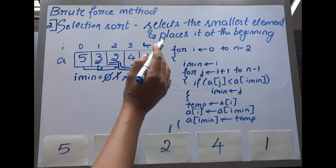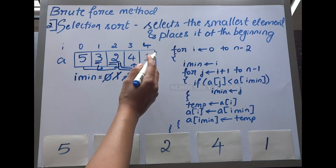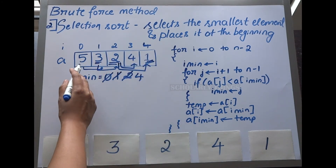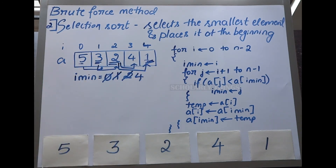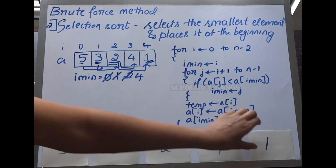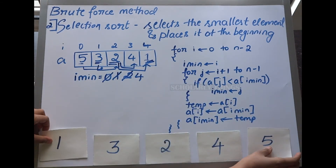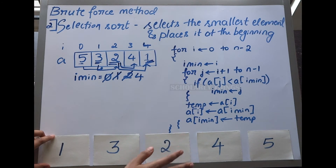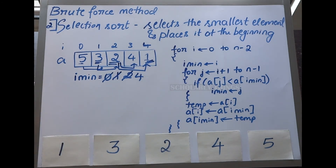At the end of the iteration, the minimum value found — which is 1 — is swapped with the element we started with, which is 5. So 1 and 5 are swapped. At the end of the first iteration the order is updated, with 1 now in the sorted portion of the array.